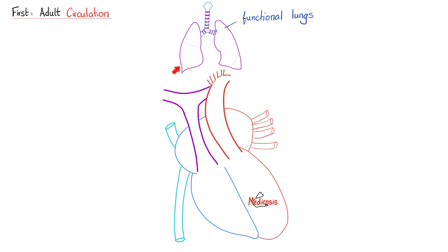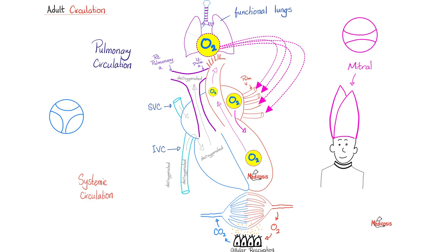Do you remember your heart and your lungs? The lung brings oxygen into your body and takes carbon dioxide out of the body. Breathe in, breathe out. This is lung respiration, or pulmonary respiration. But what happens at the cellular level is cellular respiration. Let me tell you the entire story.